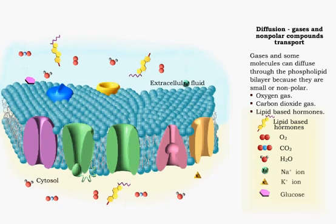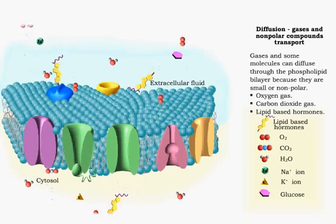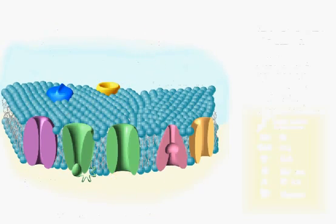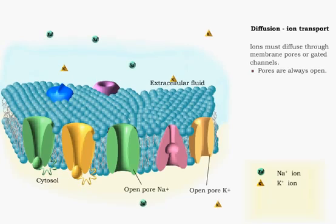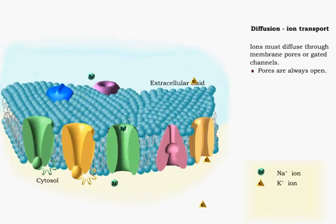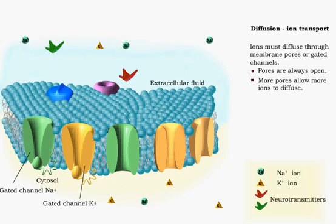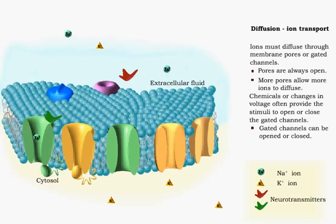Ions and glucose cannot pass through the phospholipid bilayer. Charged molecules, like ions, diffuse through the plasma membrane via membrane proteins. Leakage pores are always open. The number of pores or channels determines the amount of ions that diffuse across the membrane. Gated channels are opened when they bond to chemicals or experience changes in voltage.